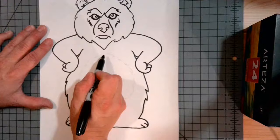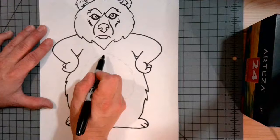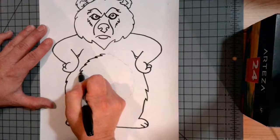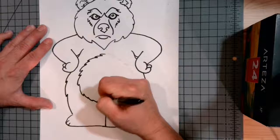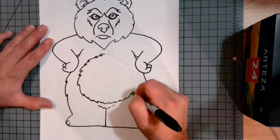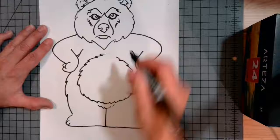All right, so now my bear is ready for a tummy. I'm going to give him a furry tummy. So at the top of his tummy, I'm just going to start doing some zigzag or jagged lines all the way around his tummy in the shape of an oval or a circle. And then I'm going to take those jagged lines or zigzag lines all the way around to the other side.